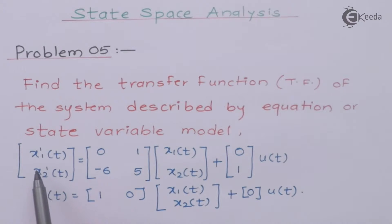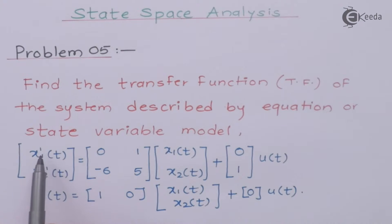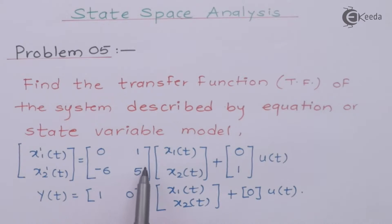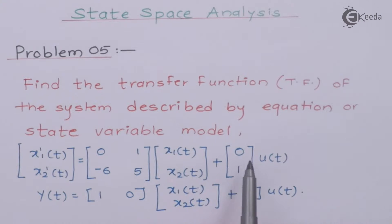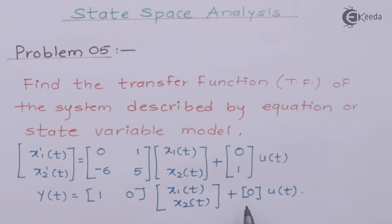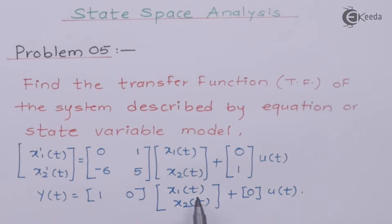Here the model is given: x1-dot(t) and x2-dot(t) are my state variables. The highest degree of differentiation is 1. This is my A matrix and x1, x2 are the state variables. This is my B matrix and the input is u(t). In the output equation, this is my C matrix and the last one is my D matrix.